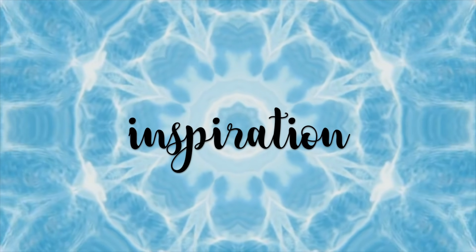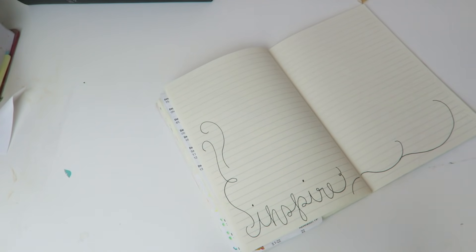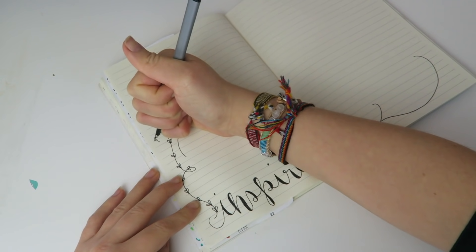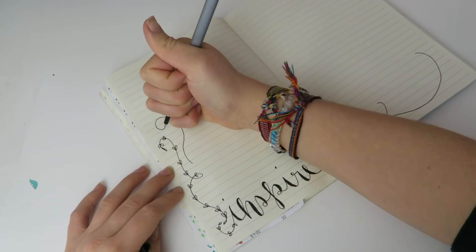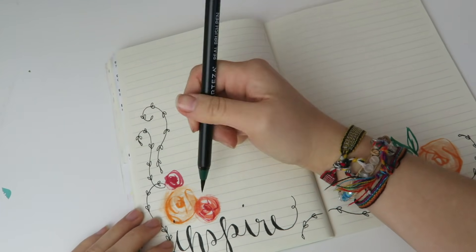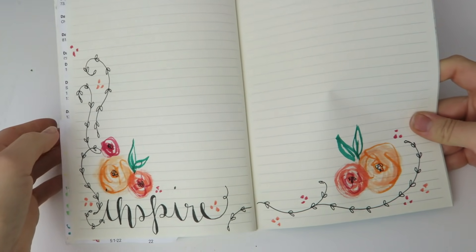And the last section I have is inspiration. Now, I decided to do this because I read a lot of Christian books and I end up finding a lot of cute quotes that inspire me so much or even like Bible verses. And I wanted an area in my journal where I could just compile all of those and have a page that I can be inspired by.